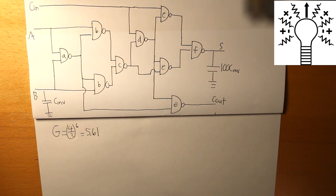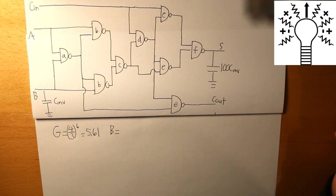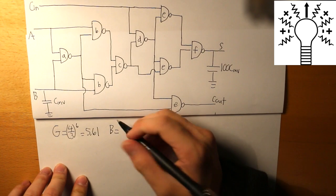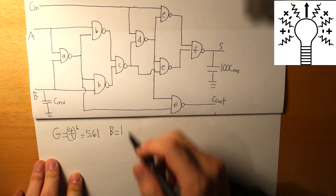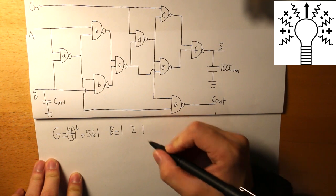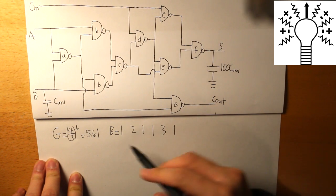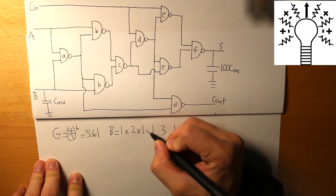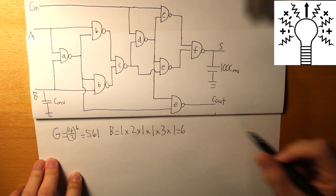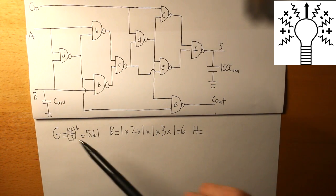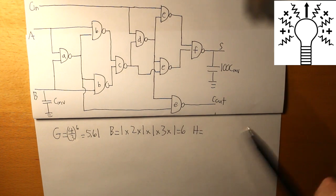Now we have to calculate our branches. Branches basically refers to how many NAND gates there are in each stage. The first stage has one NAND gate, the second stage has two, the third has one, the fourth has one, the fifth has three, and the last stage has one. We take these six numbers and multiply them together, and what we get is six. For capital H, we take the output capacitance divided by the input capacitance: 100C divided by 1C, and what we get is 100.